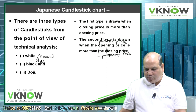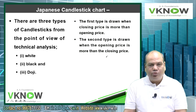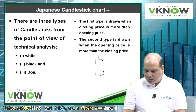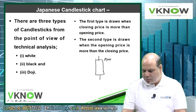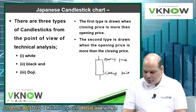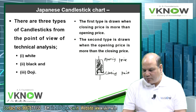The second type is drawn when the opening price is more than the closing price. Market has closed below opening price, so there was selling pressure or bearish trend. It can be drawn in black if you have a black pen, or a red pen.